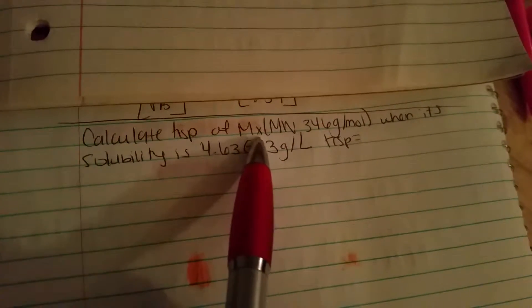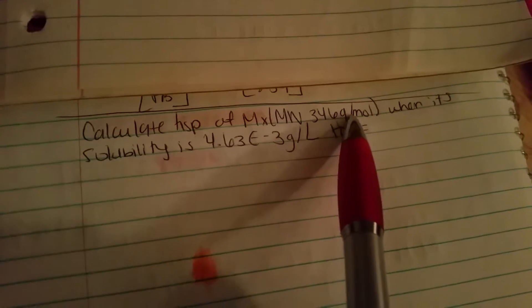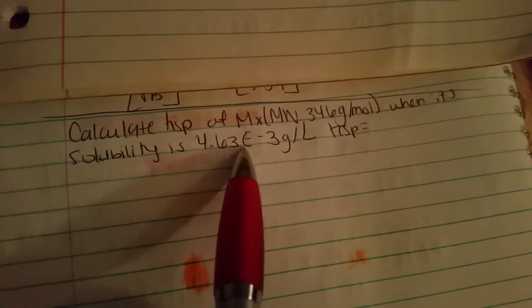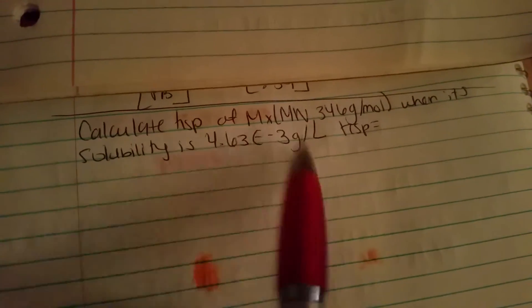Calculate the KSP of MX with a molecular weight of 346 grams per mole when solubility is 4.63 times 10 to the negative 3 grams divided by liters.